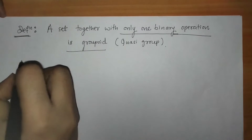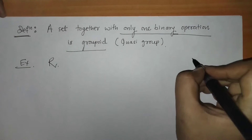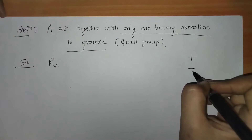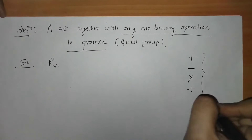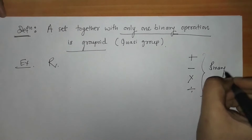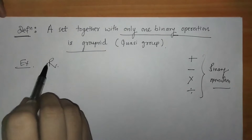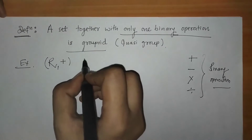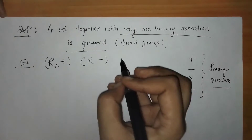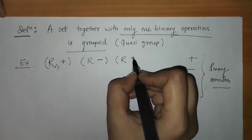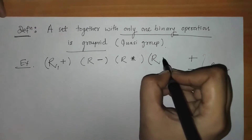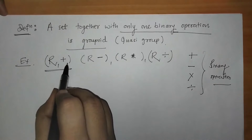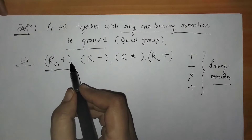We can take another example: the set of real numbers. On the set of real numbers, we have addition, subtraction, multiplication, and division — all of these are binary operations. We take only one operation at a time to define a groupoid. So R with addition is a groupoid, R with subtraction is a groupoid, R with multiplication is a groupoid, and R with division is a groupoid.